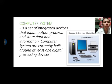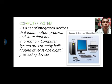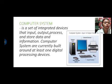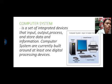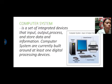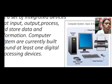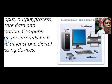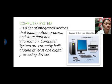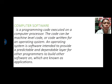A computer system is a set of integrated devices that input, output, process and store data and information. Computer systems are currently built around at least one digital processing device. I have example pictures here showing the output devices, system unit, mass storage device, and input devices. The next topic is computer software.